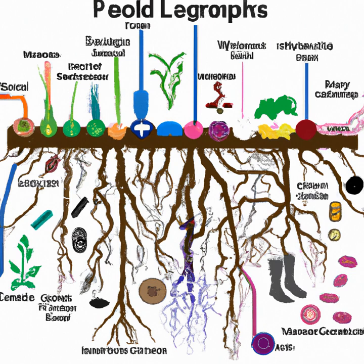Fungi are another type of microbe in the soil that plays a vital role in soil fertility. Fungi can form symbiotic relationships with plants, where they grow in association with plant roots, called mycorrhizae. Mycorrhizae helps plants absorb nutrients from the soil by extending the root system.